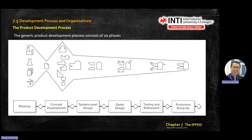For marketing: during planning, you define market segments and watch for opportunities. During concept development, you select customer needs. During system level design, you develop product option plans. For a service like insurance, you start with planning the market segment, then concept development to identify needs, then system level design to detail the coverage.